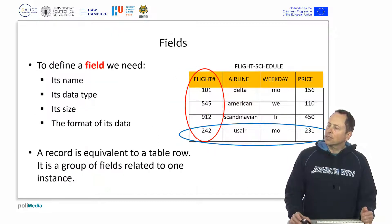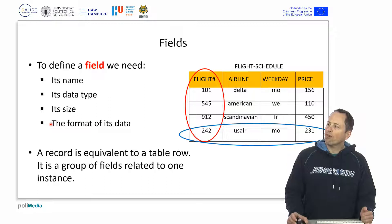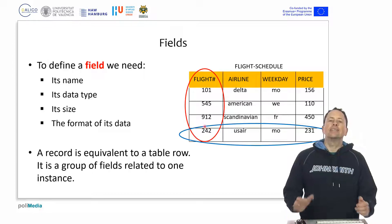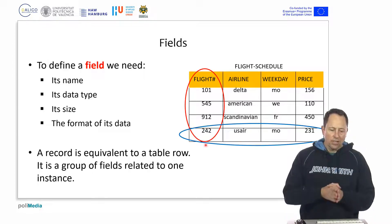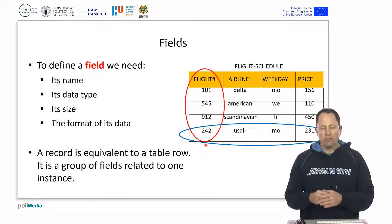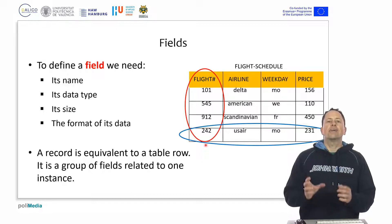Here we have the fields we were talking about, with the name, the data type, the size, and the format. We can also specify a format. In fact, in the database, for each field, we can define whether we want to be able to store any information of the type we have defined, or if we want it to be restricted by a set of rules.